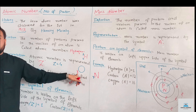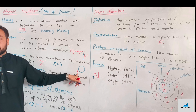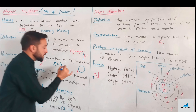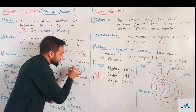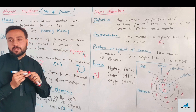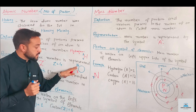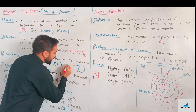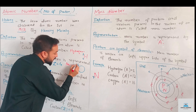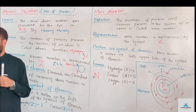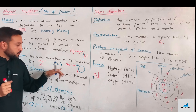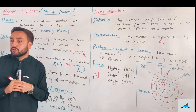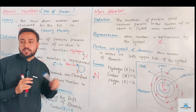For oxygen, the atomic number is 8. The mass number of oxygen is 16, meaning the total of protons plus neutrons in the oxygen nucleus is 16.